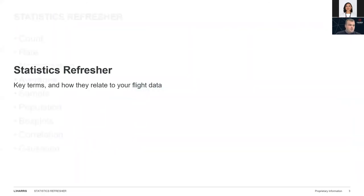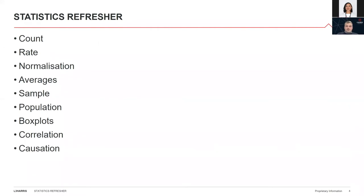Today we'll be doing a statistics refresher, a little bit about data visualization — creating charts that effectively get your message across and avoiding deception — and then how this all relates to your statistics in Flight Data Connect. We'll be looking at things like event counts, event rates, normalization of your data, differences, different averages, samples versus populations, box plots, and a reminder about correlation and causation.